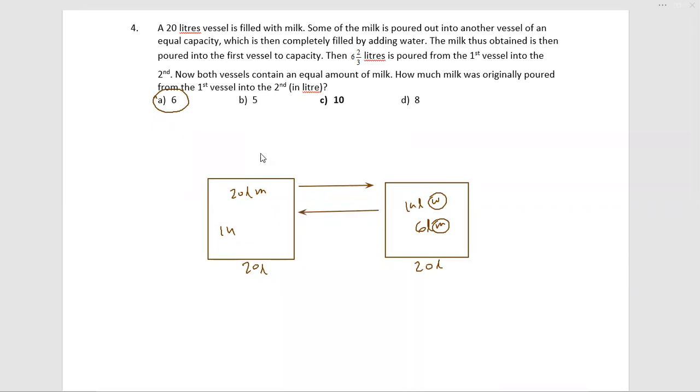14 liters was already there, 6 liters came in. In this 6 liters, we can see the ratio is 70 to 30. So 4.2 liters water and 1.8 liters milk. So right now the distribution is 15.8 milk and 4.2 water.